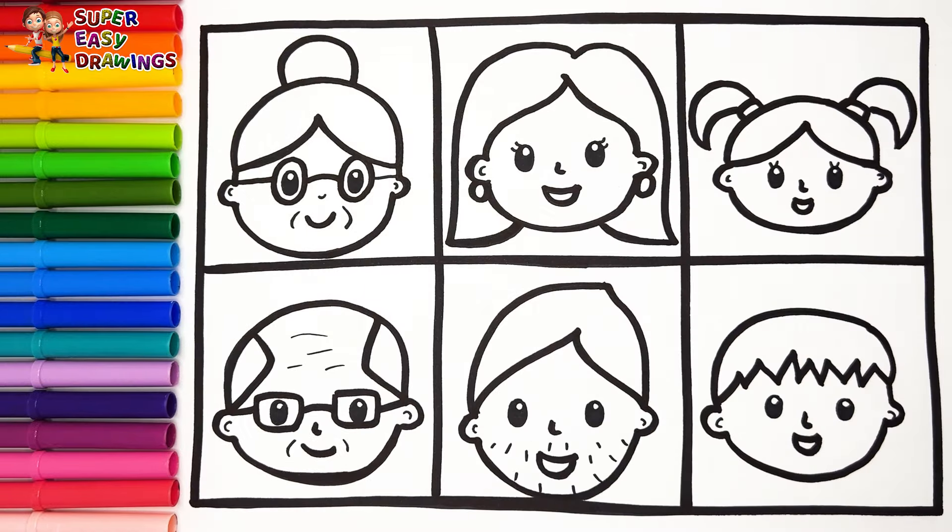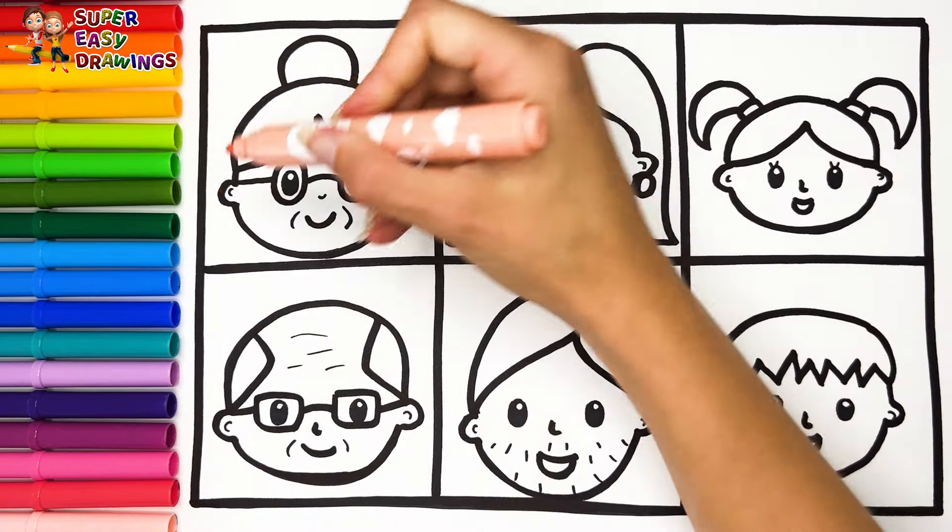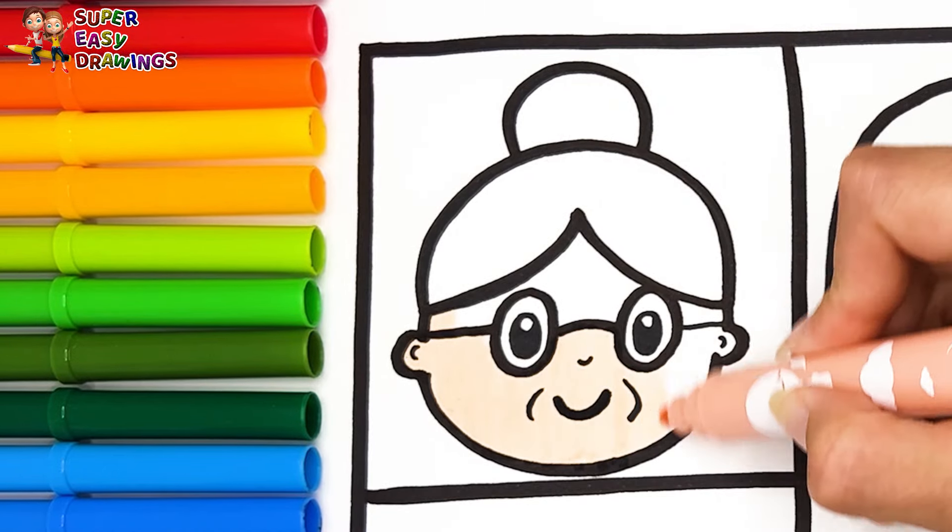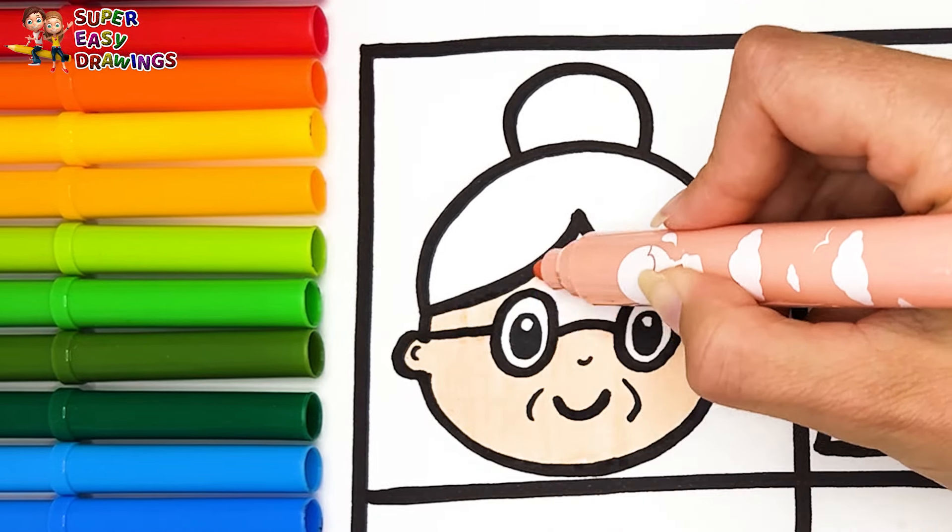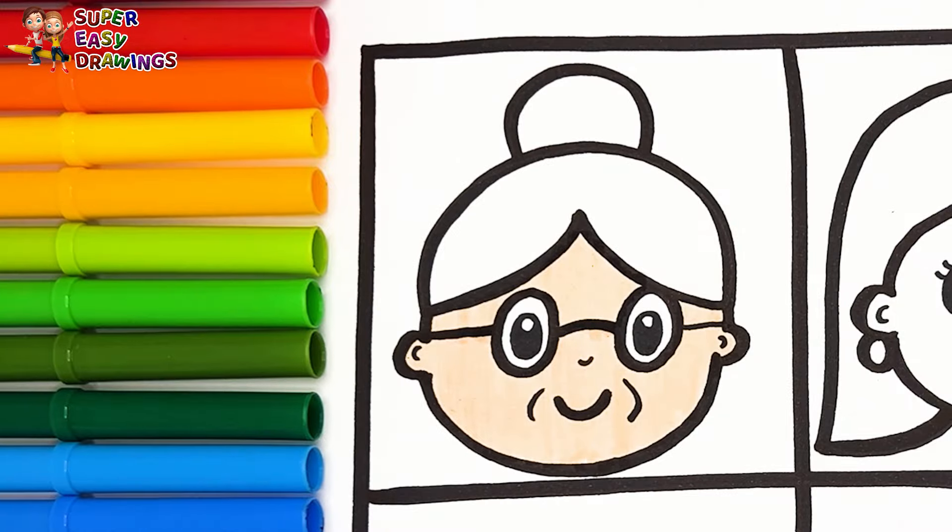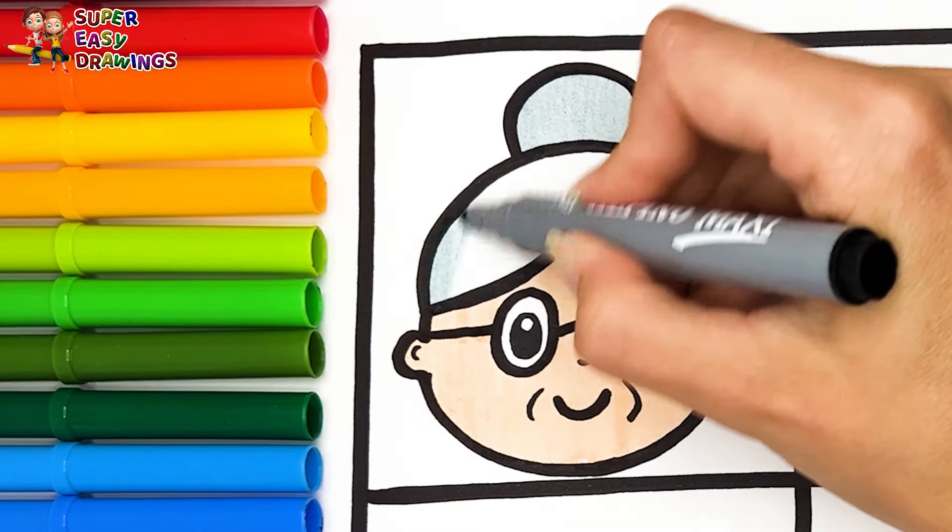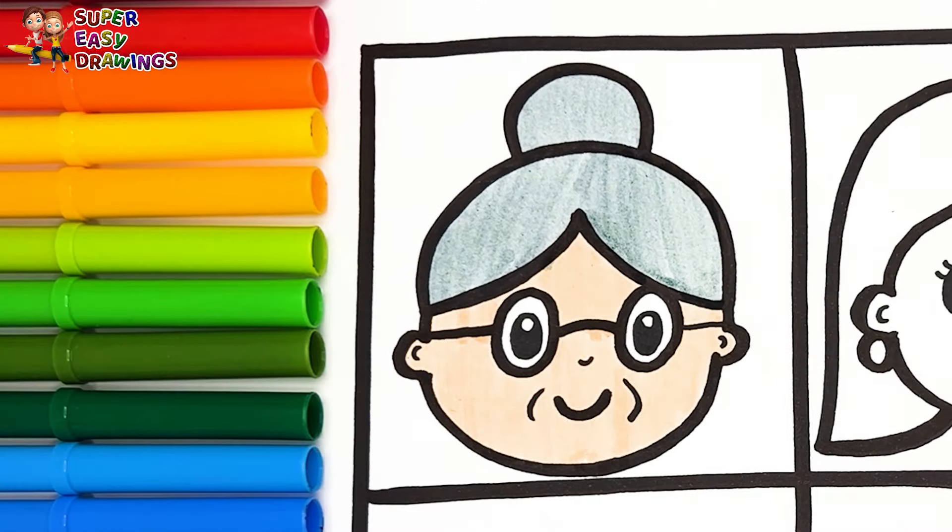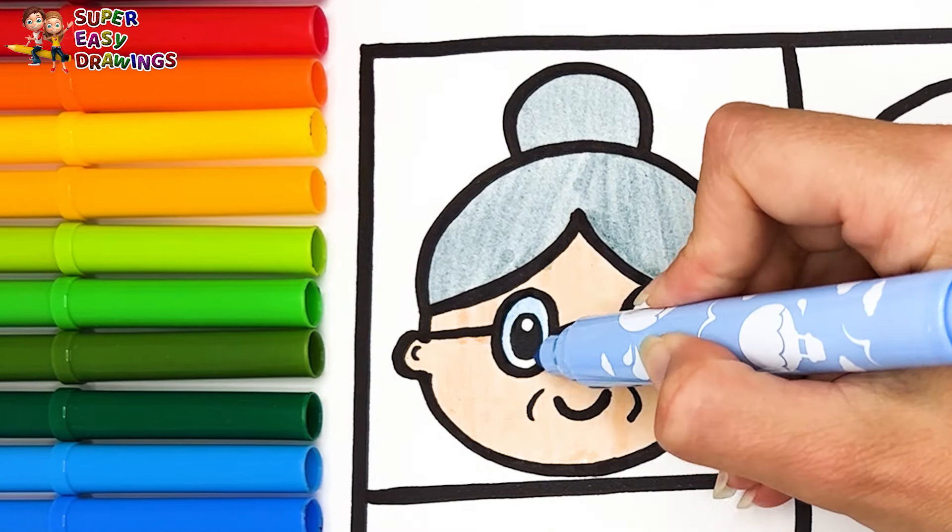Let's start coloring. I color the grandmother's skin with cream, I color her hair with gray, light blue.